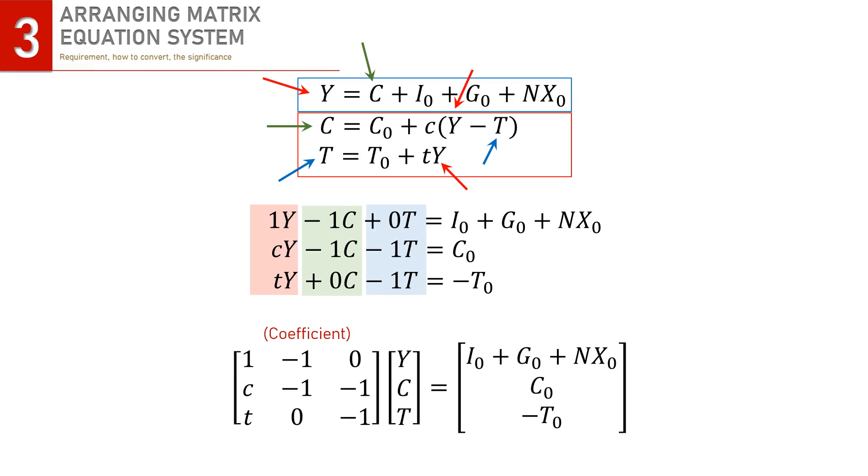Coefficient matrix times endogenous variable matrix is equal to exogenous variables and or parametric constant matrix.